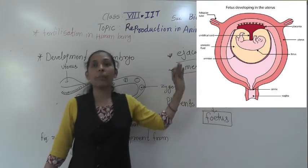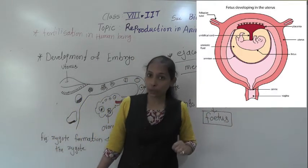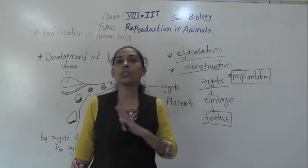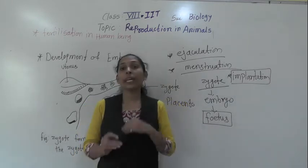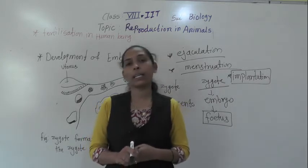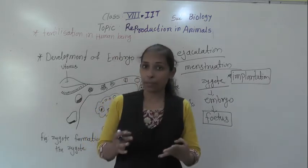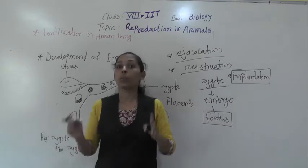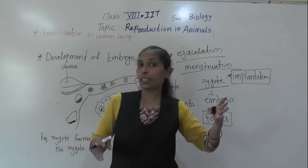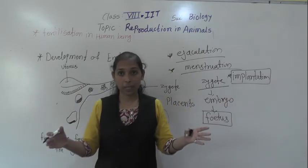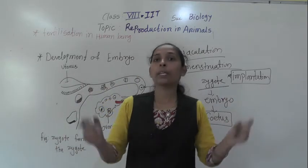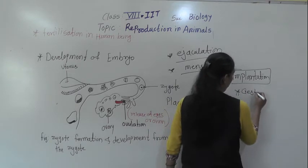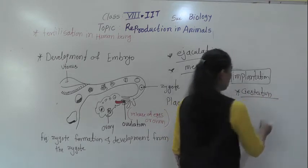With the help of the placenta, the fetus gets attached to the uterus. The placenta provides oxygen to the fetus and also removes the waste products of the fetus. When the development of the fetus is completed, the mother gives birth to the baby. The period from fertilization up to the birth of the baby is called the gestation period.